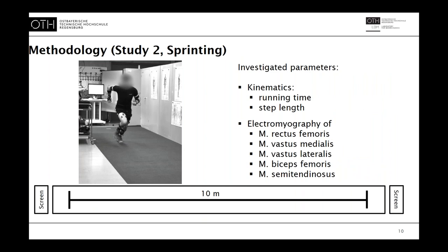The second study — the sprinting study — was conducted in our lab, where subjects ran 50 meters for baseline and stressor conditions. The 50 meters were divided into 5 times 10 meters sprint with turning points. Screens were placed in each direction to apply the stressor. The runs were executed on artificial turf to avoid sliding. Here we investigated the running time, step length, and also made an EMG analysis of the rectus femoris, vastus medialis and lateralis, biceps femoris, and semitendinosus muscle.